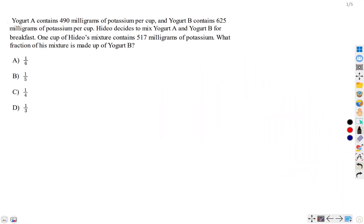Yogurt A contains 490 milligrams of potassium per cup, and yogurt B contains 625 milligrams of potassium per cup. Hideo decides to mix yogurt A with B for breakfast, and 1 cup of mixture contains 517 milligrams of potassium. What fraction of his mixture is made up of yogurt B?